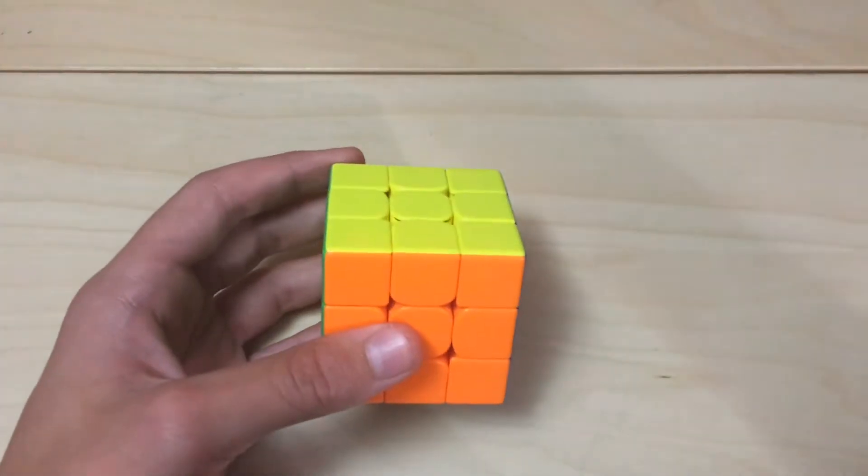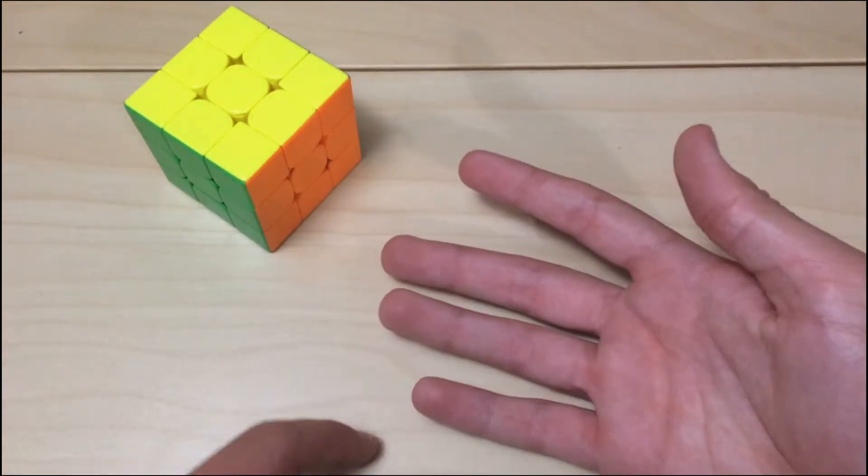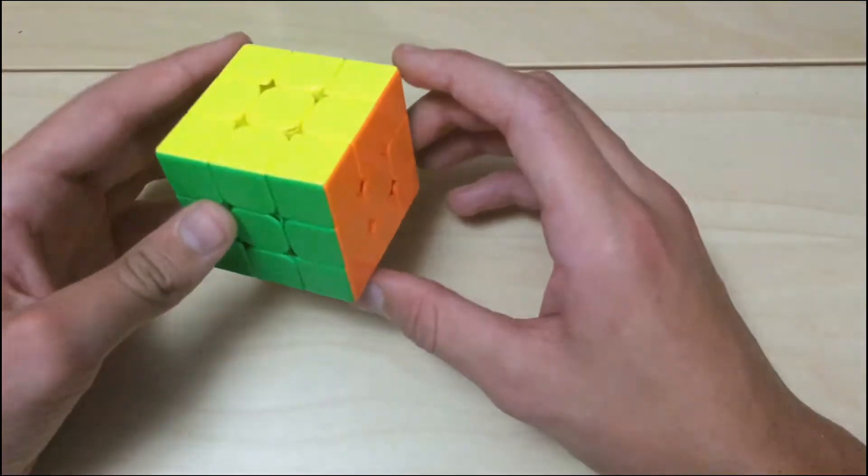So let's get into part one. Basically, there are two parts to how you finger trick something: which finger I use, and where I use it.